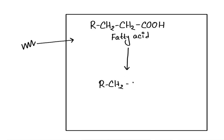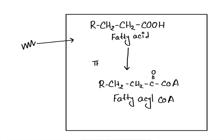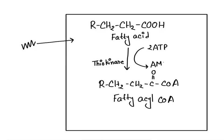Suppose this is the cytoplasm of a cell. After a fatty acid enters into the cell, the fatty acyl-CoA synthetase enzyme, which is also called thiokinase enzyme, will convert fatty acid into fatty acyl-CoA. For converting it, two ATP are required, so two ATP is used.